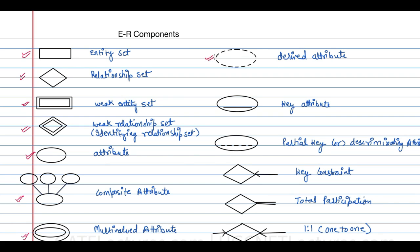This is representing a derived attribute, key attribute, partial key, key constraint. So here in this key constraint you can see the sign here. So again here it is representing the total participation and this is representing the relation is 1 to 1 because in both the sides we have this sign so that means the relation is 1 to 1.